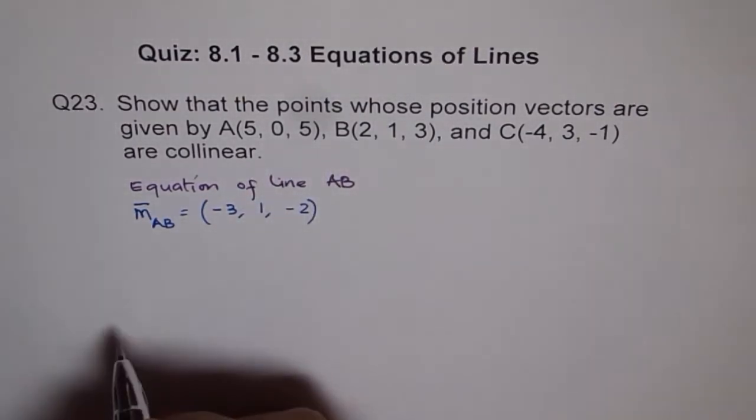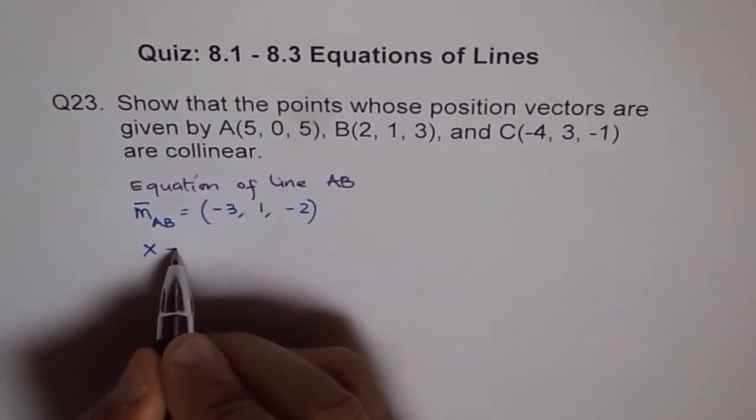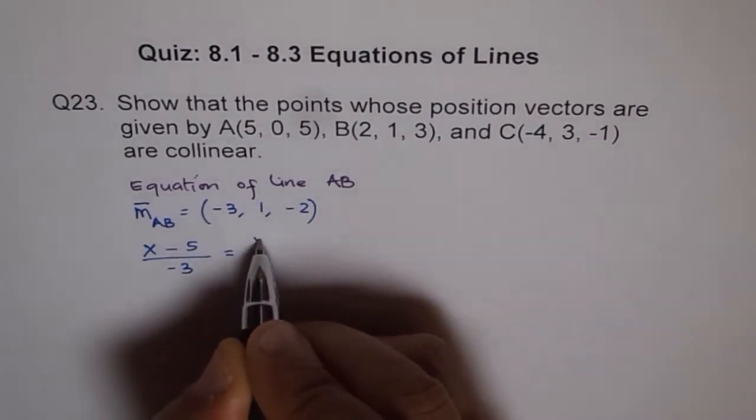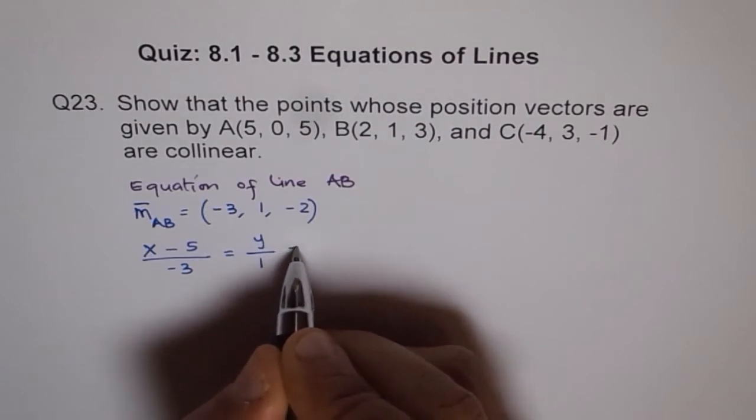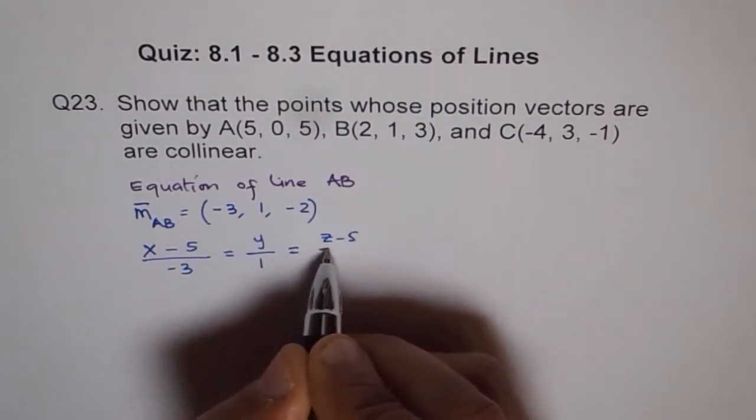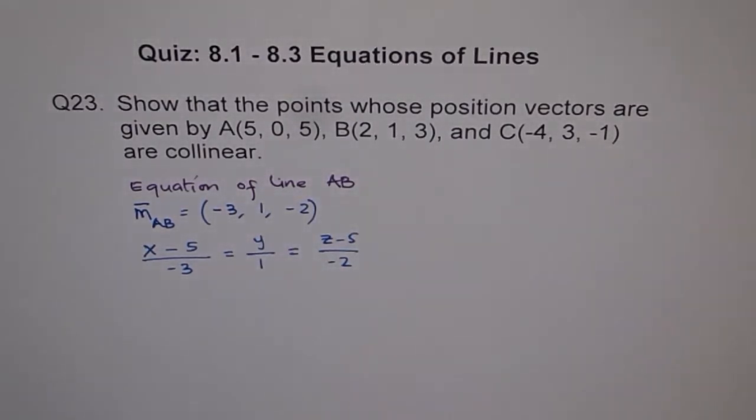Now, we can write down the equation. Equation should be x minus 5 over minus 3 equals to y minus 0 over 1, and z is z minus 5 over minus 2. So that's our equation for line AB.